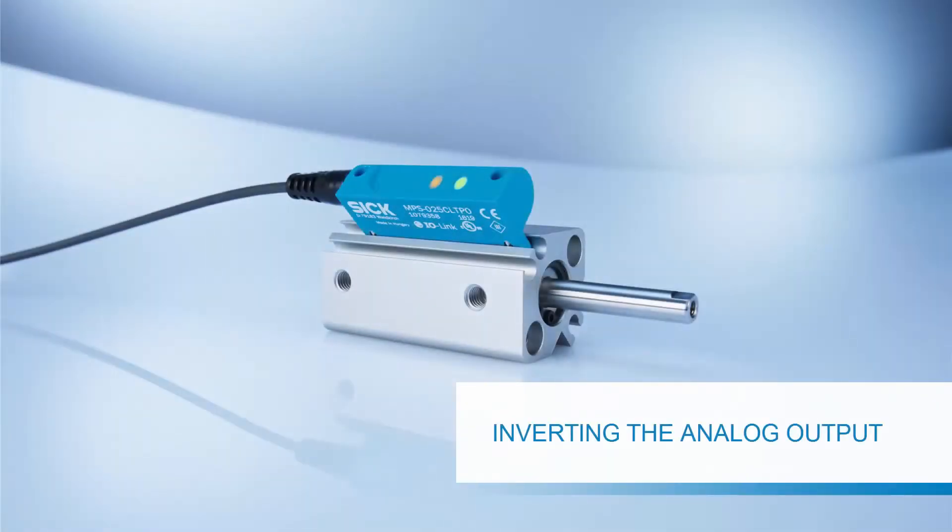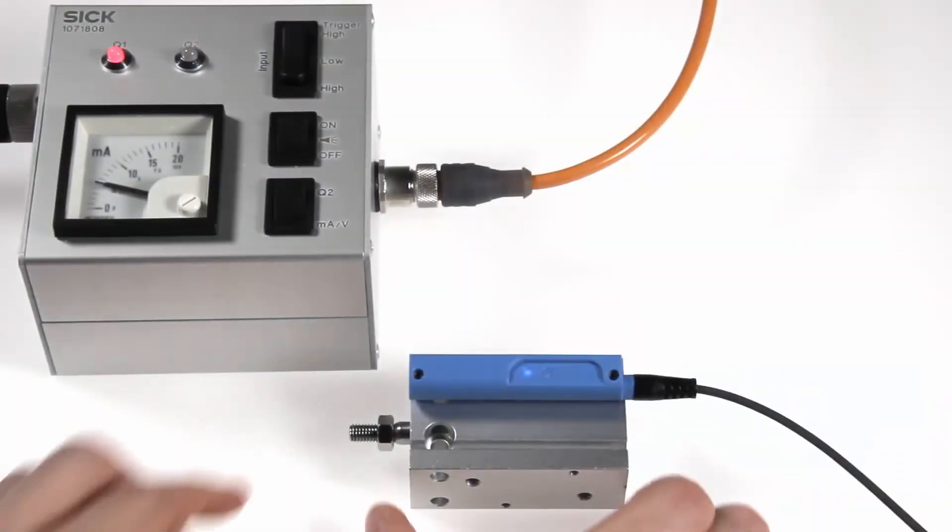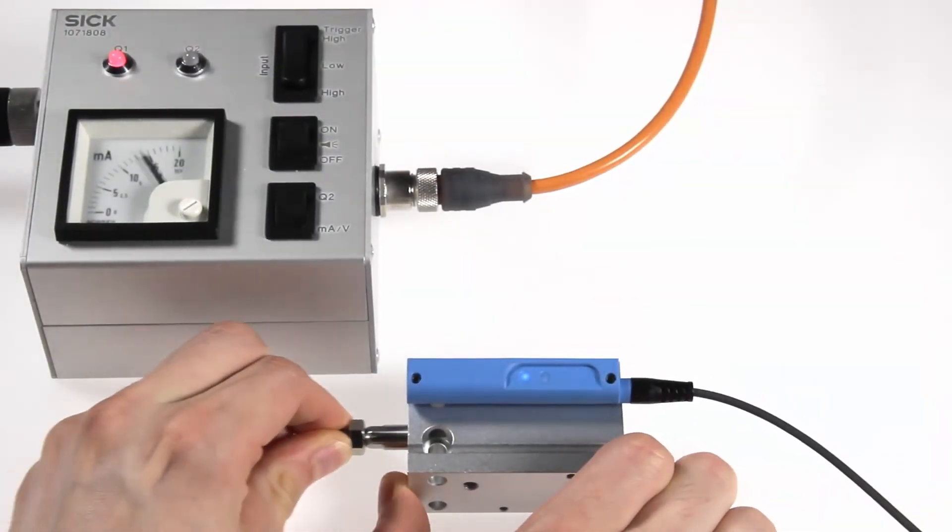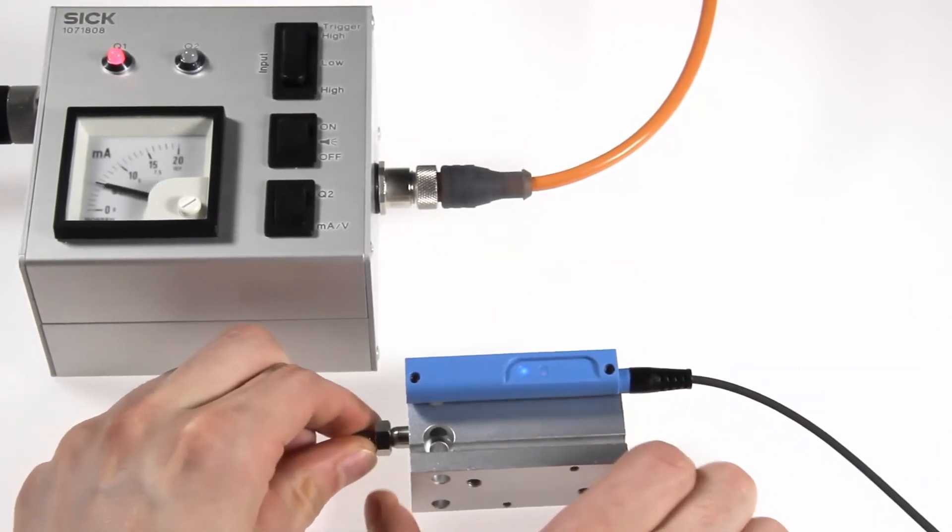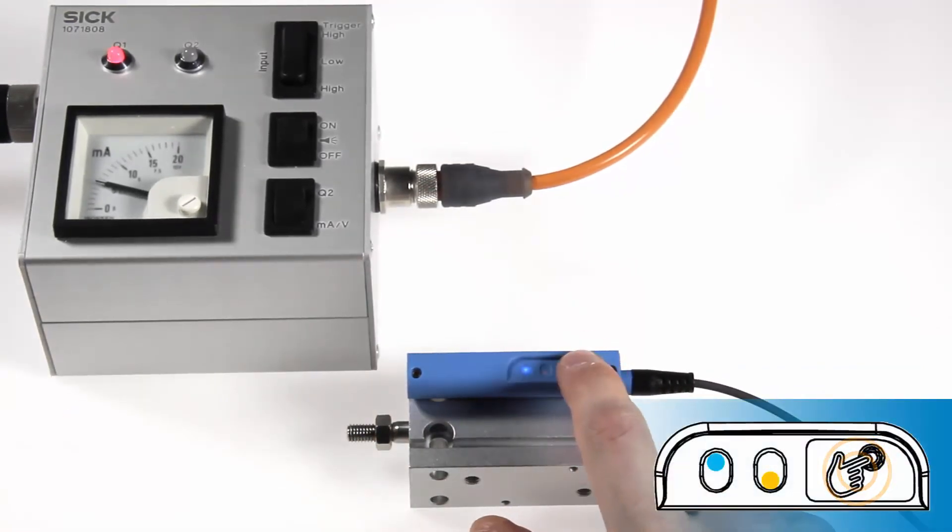Inverting the analog output. For some applications or mounting situations, it is necessary to invert the output. To do so, press the keypad and hold it for 9 to 11 seconds.